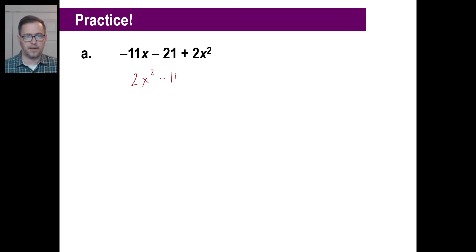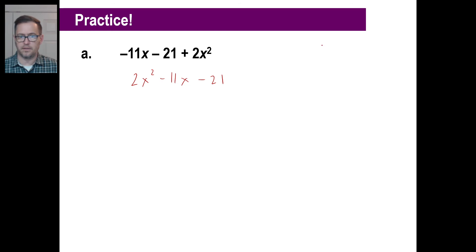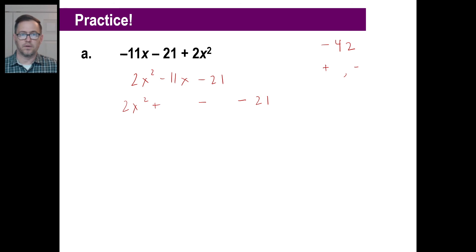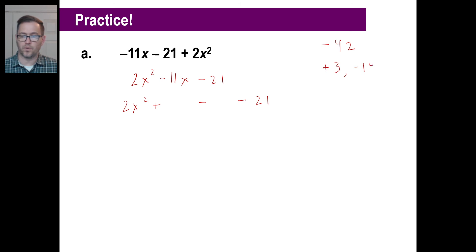Now let's try practice problem A: 2x squared minus 11x minus 21. Multiply 2 times negative 21 to get negative 42. We need two numbers that multiply to give negative 42 and add to give negative 11. It won't be 7 and 6 or 21 and 2. Since 42 is divisible by 3 and the digits of 42 add up to 6, we look at 3 and 14: positive 3 and negative 14 multiply to negative 42 and add to negative 11. That's our pair.